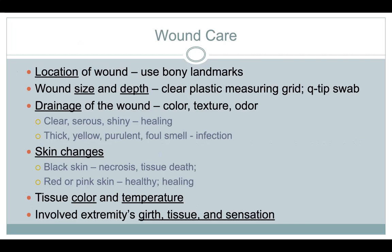When you have to describe a wound, this is the nomenclature — how you discuss what a wound is. You give the location using bony landmarks, for example: directly over the sacrum or two centimeters lateral to the left greater trochanter. We use disposable rulers and sticks to measure the wound in inches and centimeters.